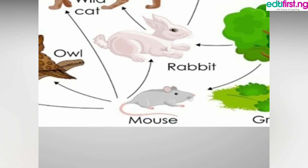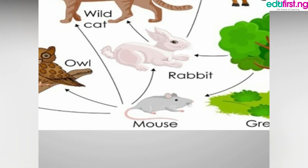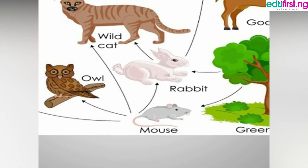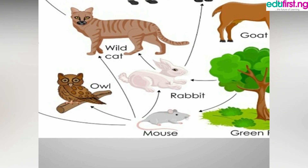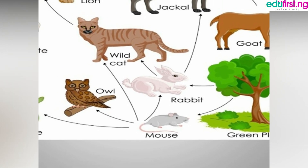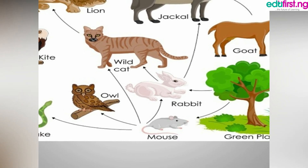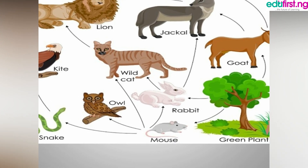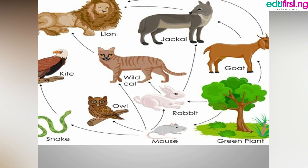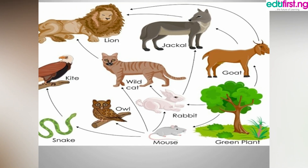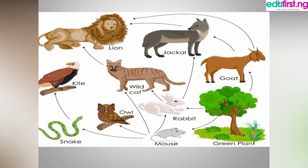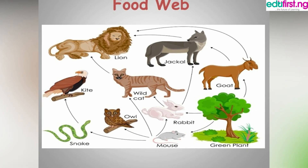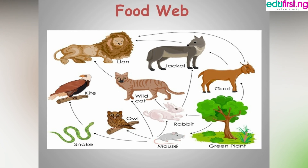Also, the mouse is eaten by the white cat, the white cat is eaten by the lion. The mouse is also eaten by the rabbit, and so on. The mouse gets energy from the green plant. The green plant is another starting point — the goat eats the green plant, then the jackal eats the goat, and the lion eats the jackal. It's an interconnection of food chains. A food web is the connection, or coming together, of many food chains.